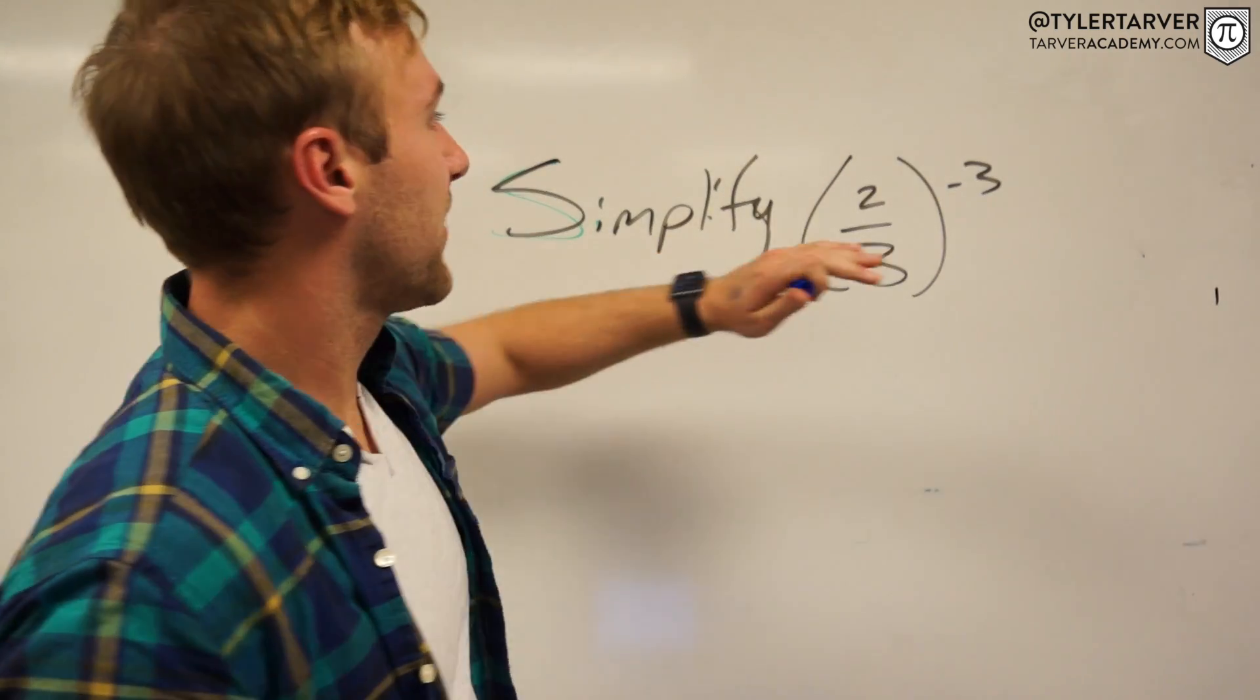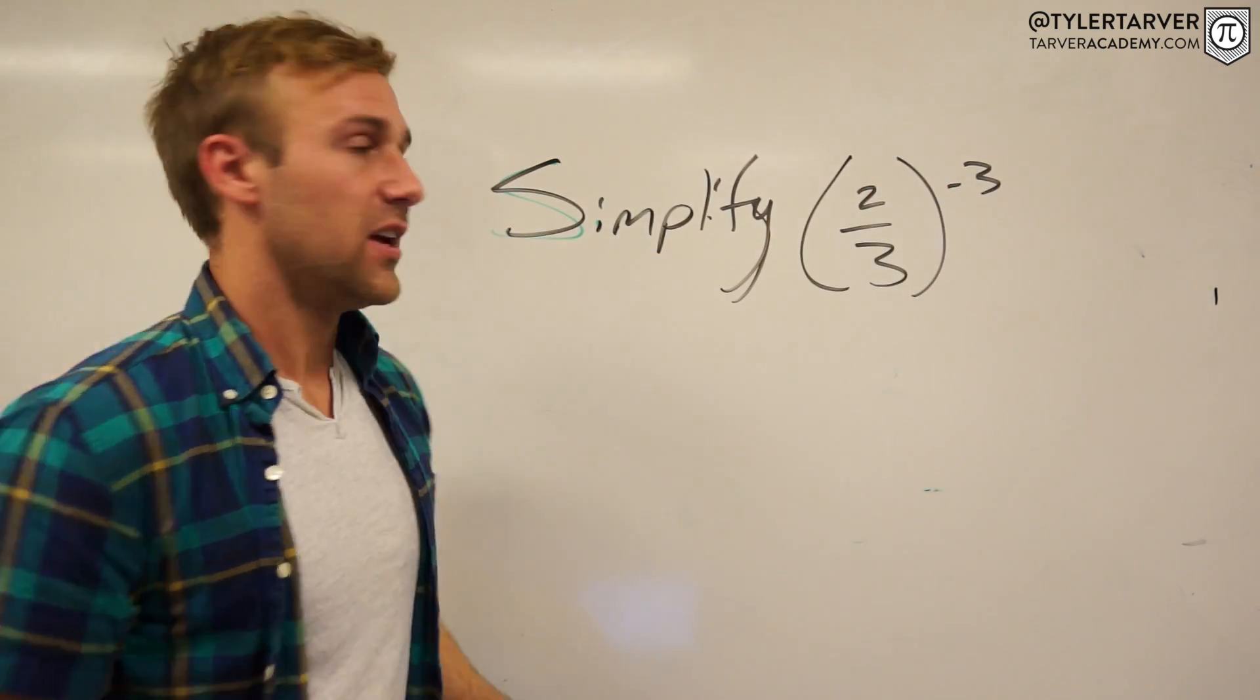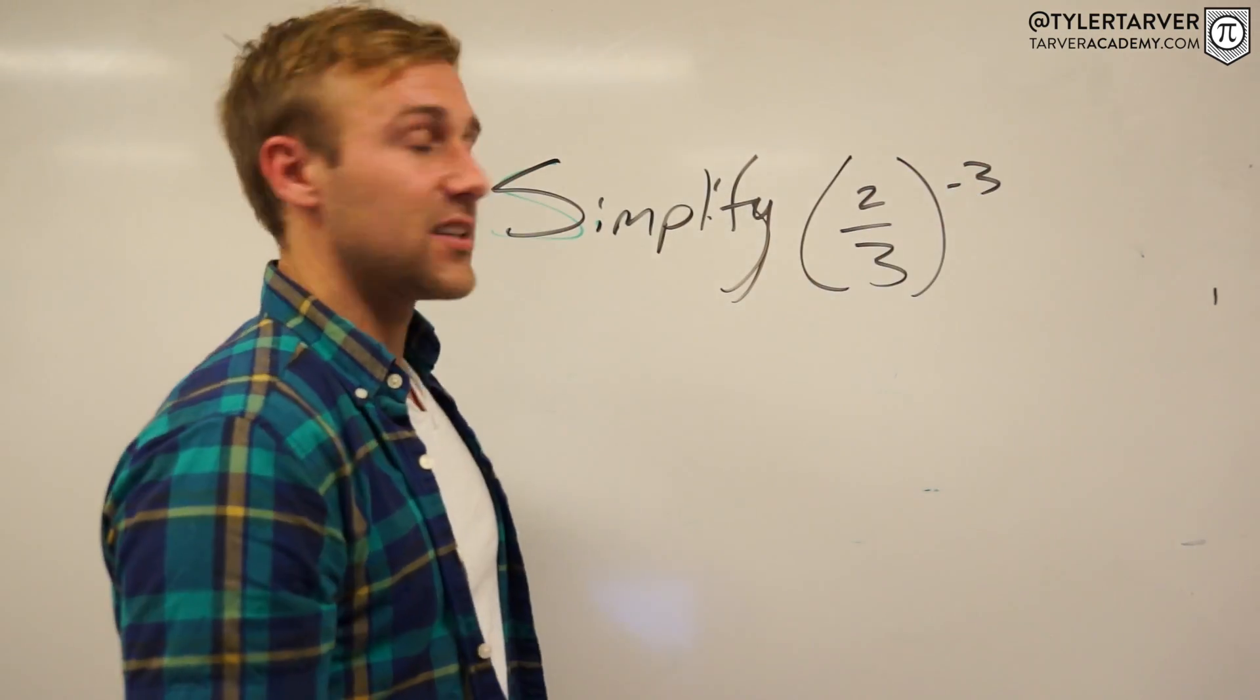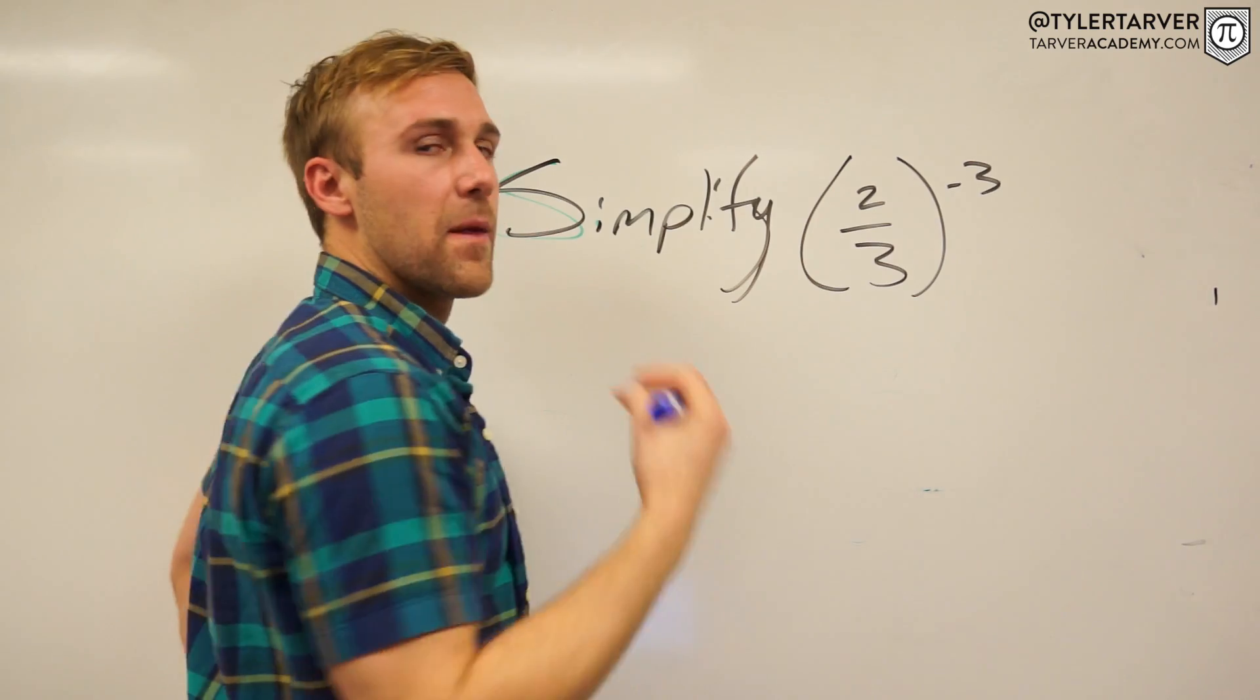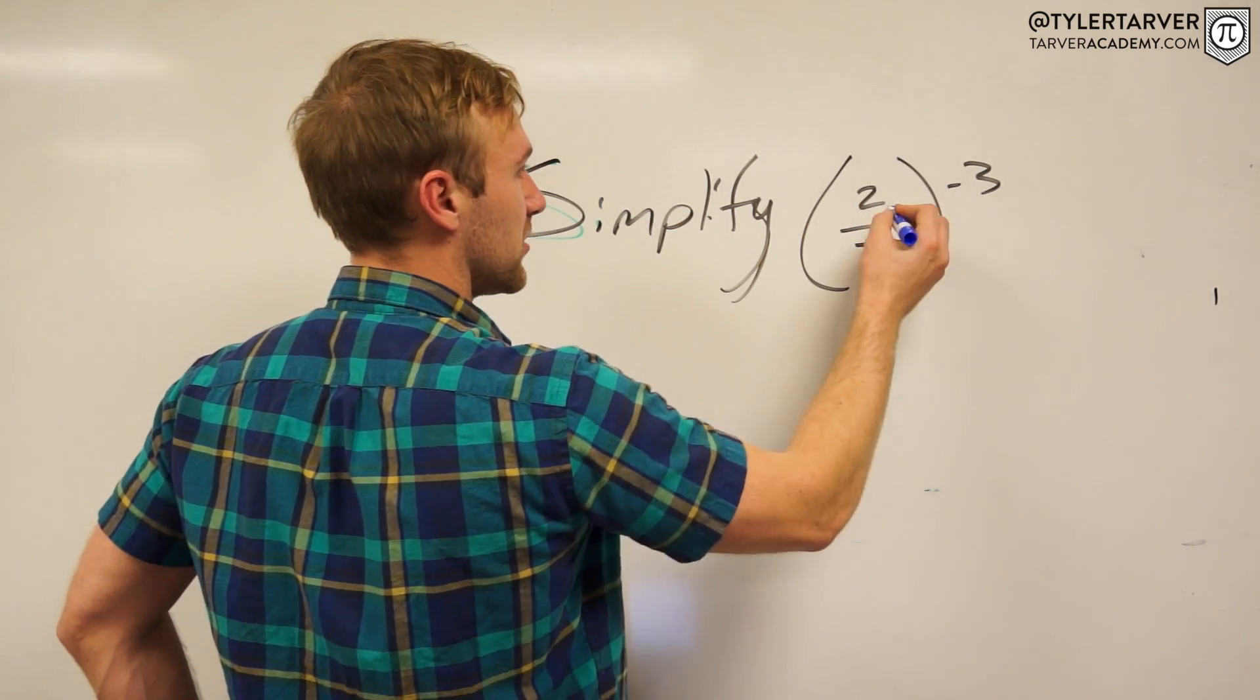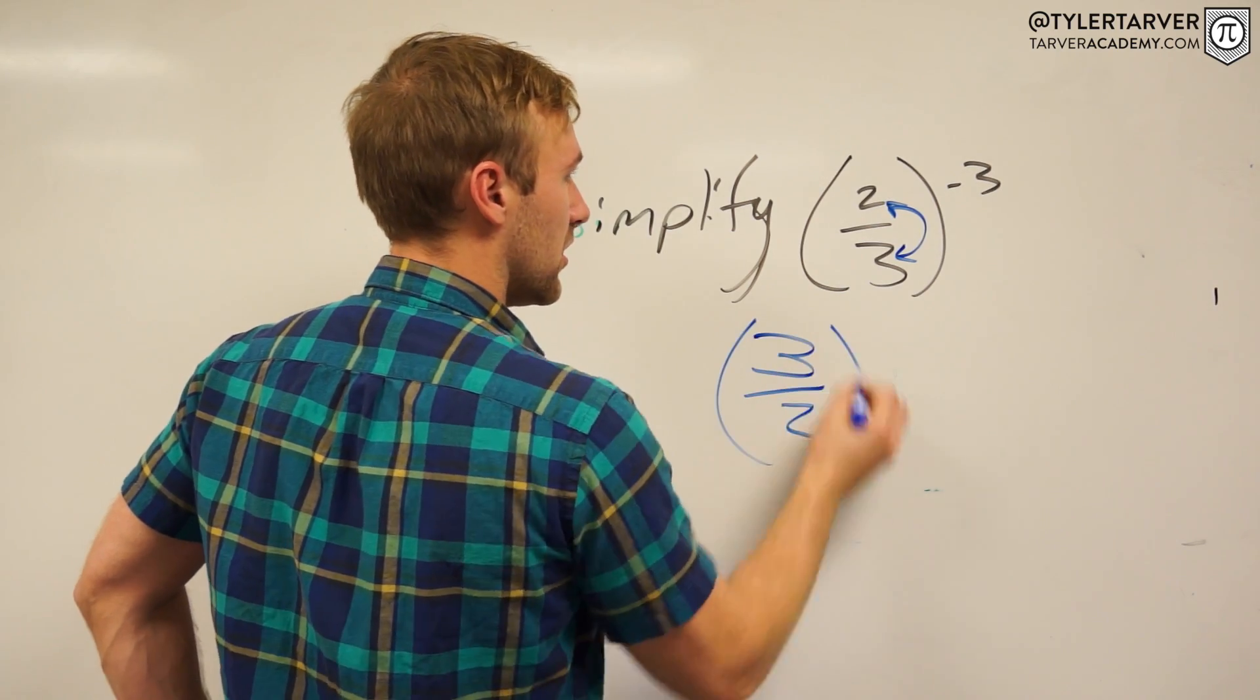So we're looking at simplify (2/3) to the negative third. First step: anytime you have a negative exponent like this, it's going to flip your numerator and denominator. To get rid of that negative, the price of admission is flipping your fraction. So now the 3 goes on top, the 2 goes on bottom. So it would be (3/2) to the third.